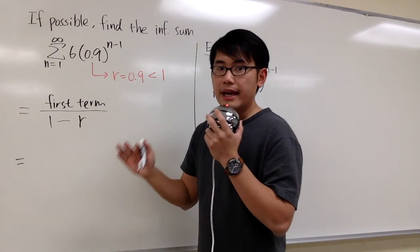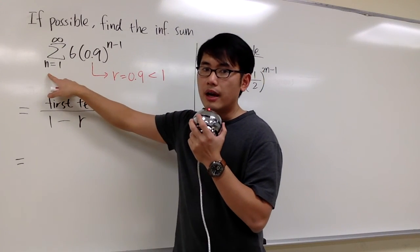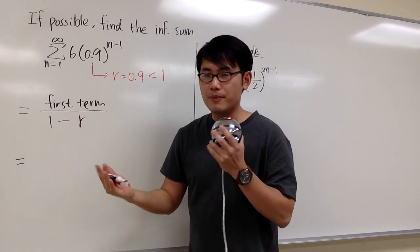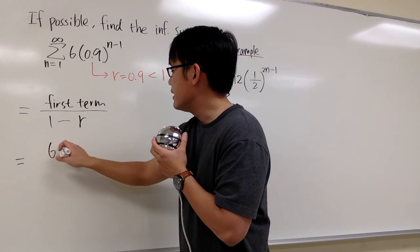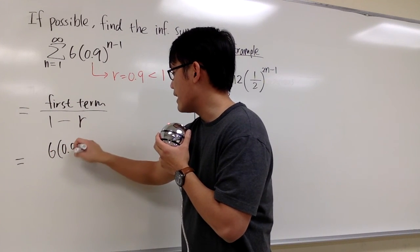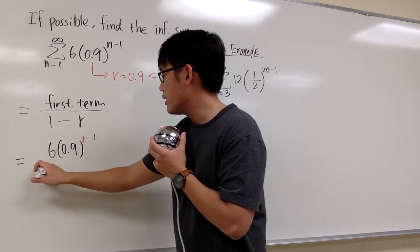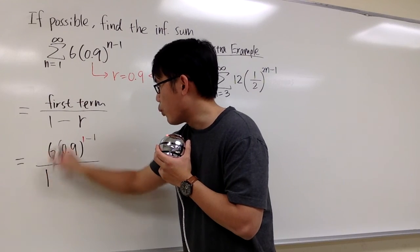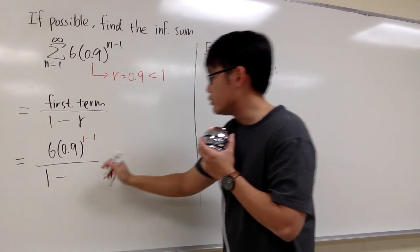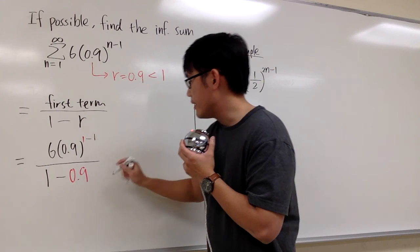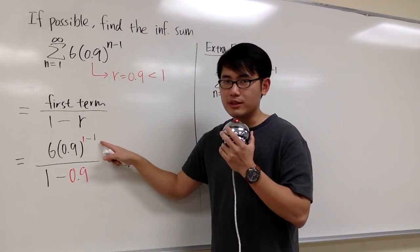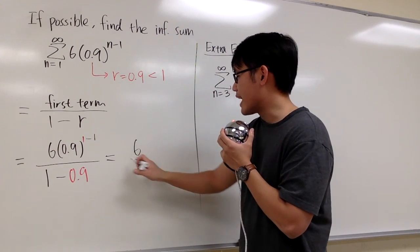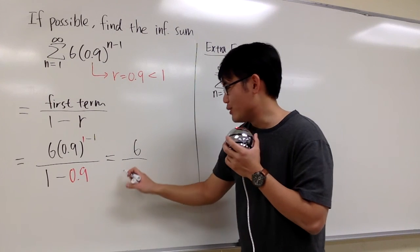Let's compute the first term. It depends on what we start with — here n is equal to 1, so we plug in 1 into n. That gives us 6 times 0.9 raised to the 1 minus 1 power. 1 minus 1 is 0, and 0.9 to the 0 power is 1, so 6 times 1 is 6. We have 6 on top, over 1 minus 0.9 on the bottom, which is 0.1.